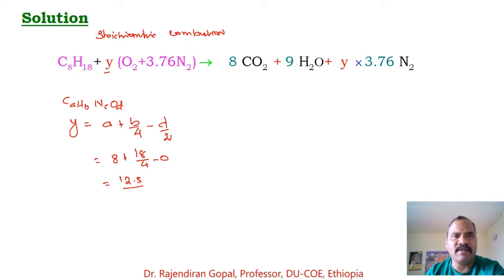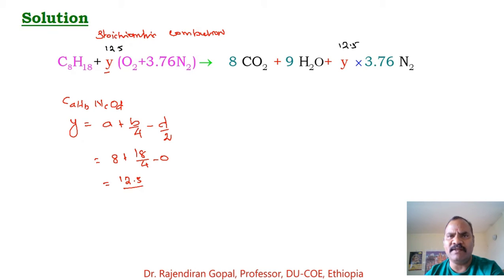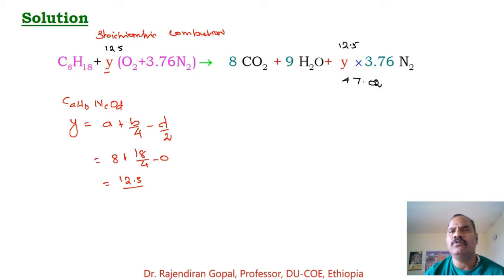The stoichiometric combustion equation becomes: C8H18 + 12.5(O2 + 3.76 N2) → 8 CO2 + 9 H2O + 47.0 N2 — that is 12.5 × 3.76 = 47.0 kilomoles of N2.